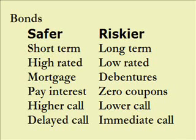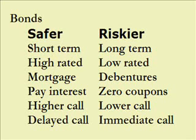Convertibility is a desirable feature, but it's usually attached to riskier bonds — it's like going on a blind date where you want to know everything but they only tell you what's not important. Convertible bonds have a conversion value slope, a conversion ratio, and a conversion price; these are described in both Moody's and Standard & Poor's Bond Guides.